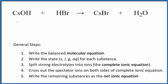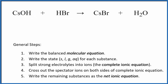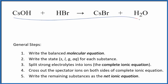Let's write the balanced net ionic equation for CsOH plus HBr — cesium hydroxide and hydrobromic acid. The first thing we need to do with net ionic equations is balance the molecular equation. This is our molecular equation, and I can see that it's already balanced, so that's kind of nice.